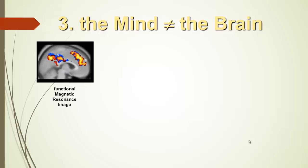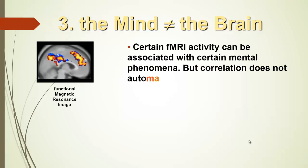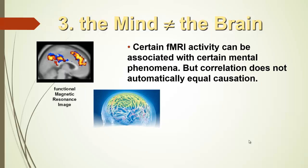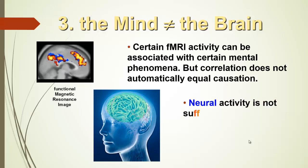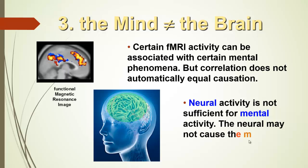In a functional magnetic resonance image, sure, certain activity can be associated with certain mental phenomena. But correlation does not equal causation. Causes might be different. Neural activity is not sufficient for mental activity. It may not cause the mental, but just reflection of what is going on in the mind.